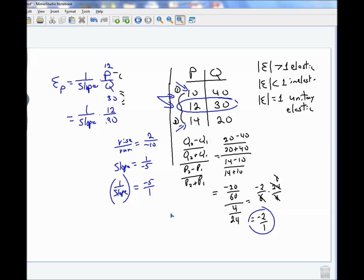So 1 over the slope is minus 5 over 1. So then I have minus 5 over 1 times 12 over 30. All right? Now it turns out that the 5 will go into 30 six times, right? And so I'm left with minus 12 over 6, or minus 2 over 1. So it's true.